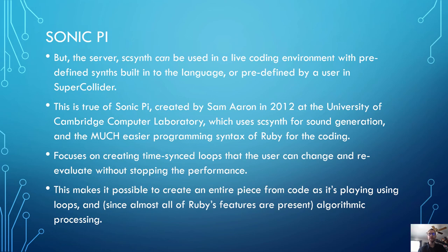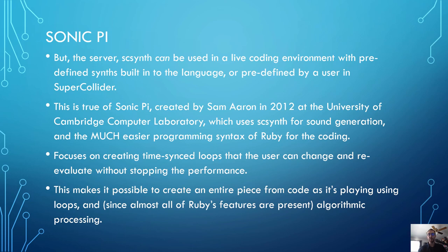Sonic Pi uses SCSynth for all of the sound generation — much like Super Collider, you just have SCSynth running in the background while you send it information from the code editor. But Sonic Pi uses the Ruby programming language's syntax, which is much easier and more forgiving. The focus of Sonic Pi and pretty much all live coding is creating time-synchronized loops that the user can change and re-evaluate without stopping the performance. If I've got a session running, I make some changes, hit run again, and it keeps going without dropping a beat. Because almost all of Ruby's feature set is present, you can do a lot of cool algorithmic processing, conditionals, and all sorts of loops.